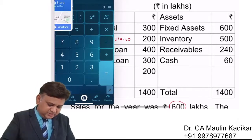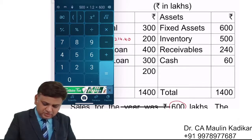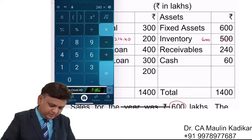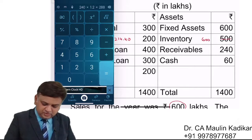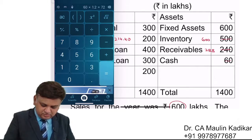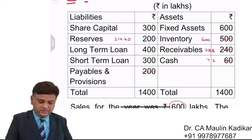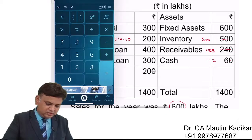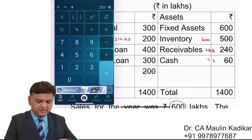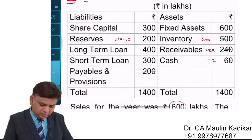Stock 500 into 1.2 becomes 600. Debtors 240 into 1.2 becomes 288. Cash 60 into 1.2 becomes 72. Payables and provisions will also increase — creditors will increase, income tax provision will increase. Since sales increase, payable provisions 200 into 1.2 becomes 240.